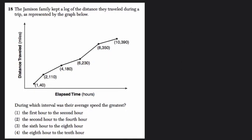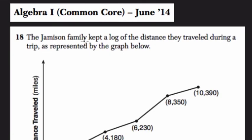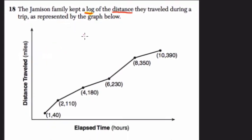Let's start by reading this problem. That's usually where I start. The Jamison family kept a log of the distance they traveled. A log, of course, could be a graph or it could be a journal. It's just a record of what you've been doing. The distance they traveled during a trip, and it's represented by the graph below.